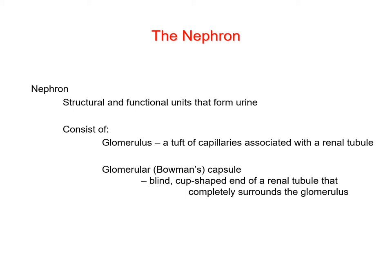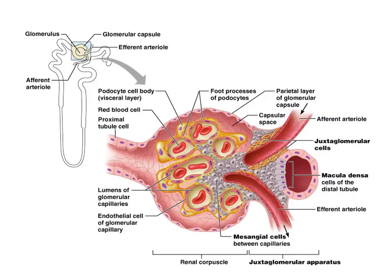The nephron is the functional unit that forms urine in the kidneys — there's a million in each kidney. The process in the nephron starts with the glomerulus, where the initial filtrate forms, getting filtered across the wall of the glomerulus and the podocytes into the glomerular Bowman's capsule.